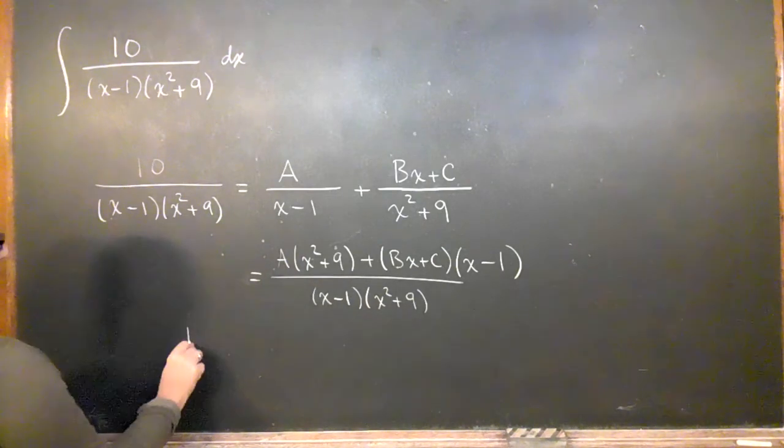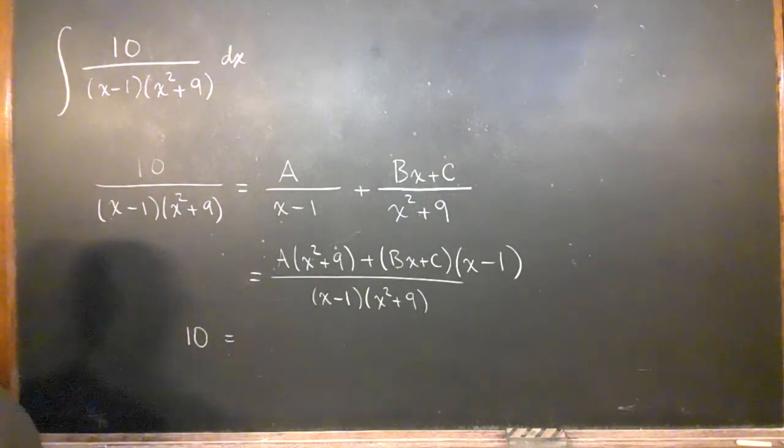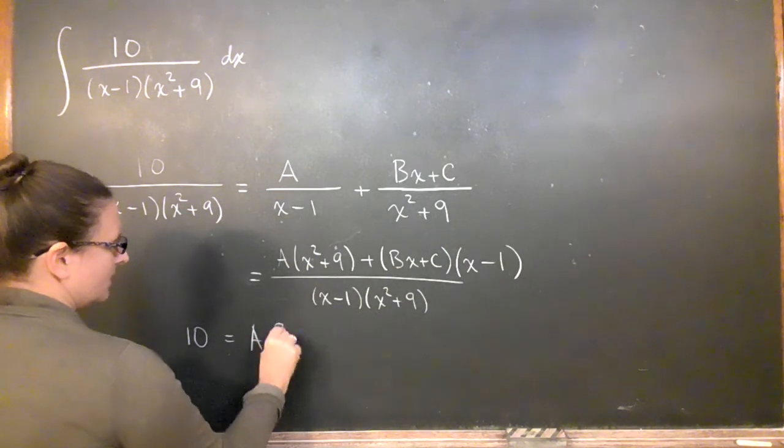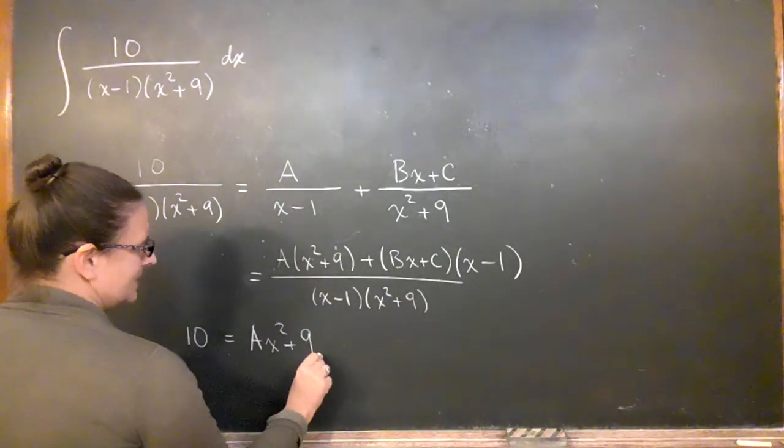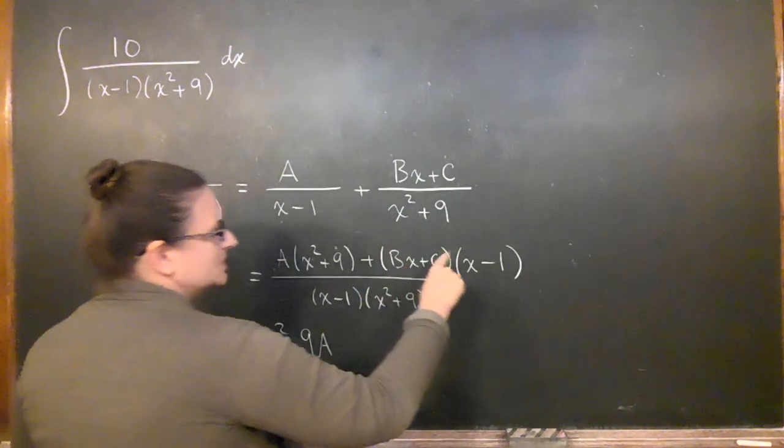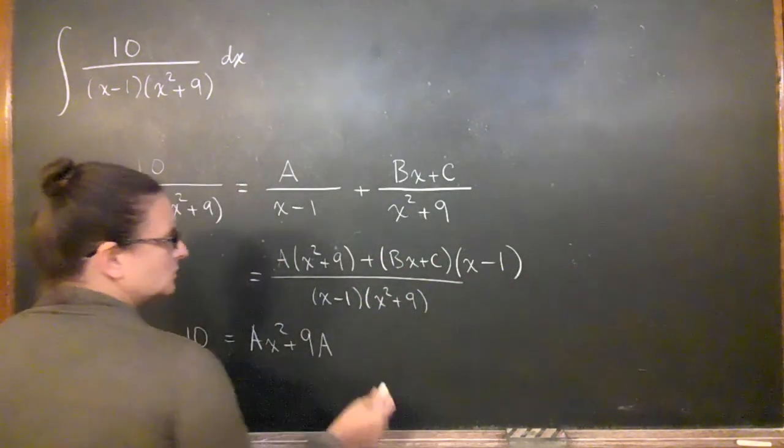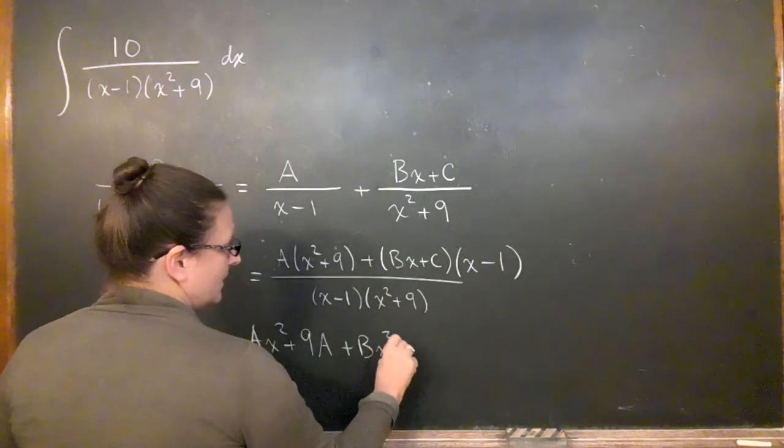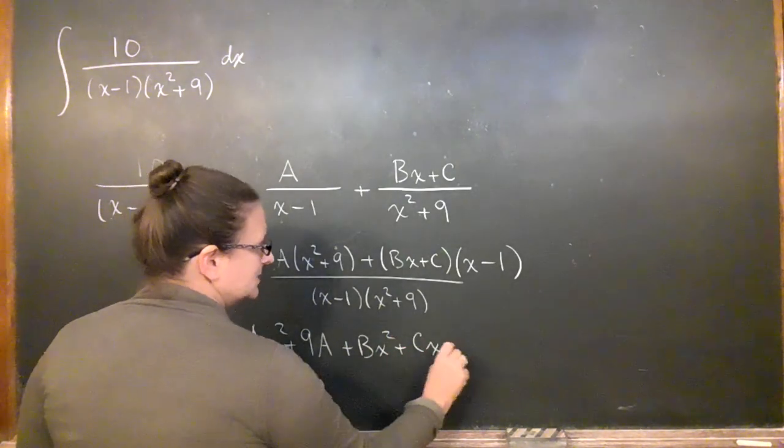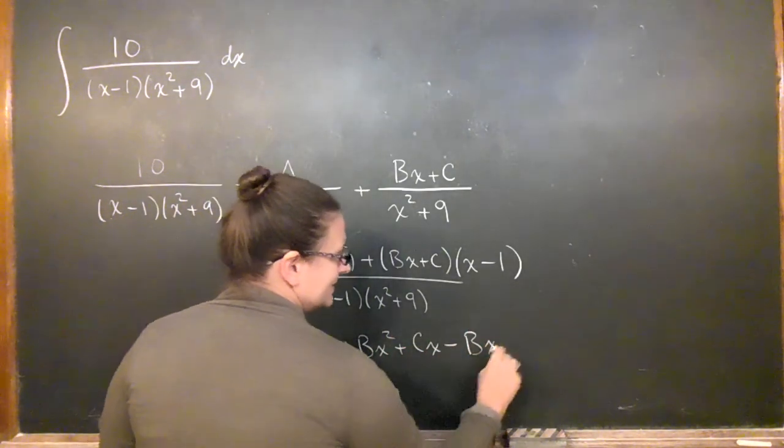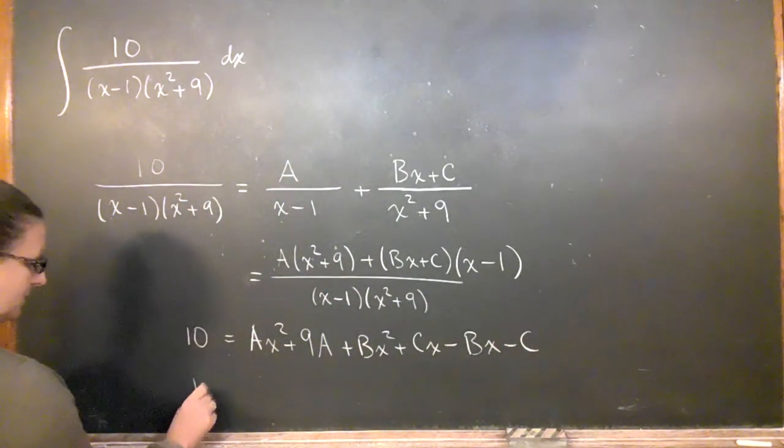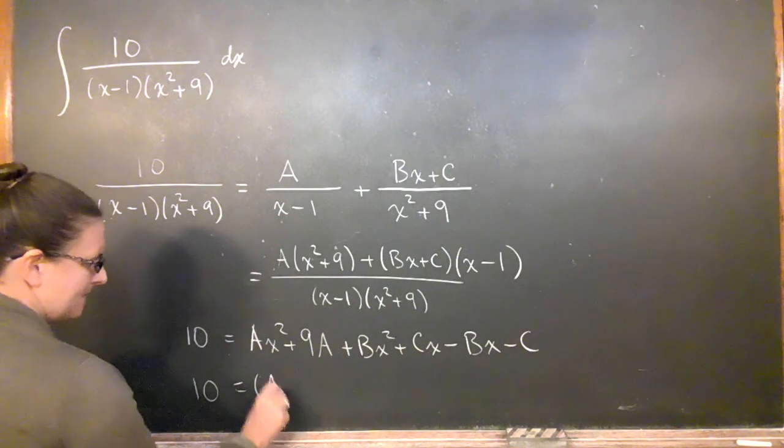Okay, so then there's only 10 on the left-hand side here. Okay, so on the right-hand side, I've got ax squared plus 9a, and then this is bx plus c times x minus 1. So I've got bx squared plus cx minus bx minus c. So let's clean it up a little here.